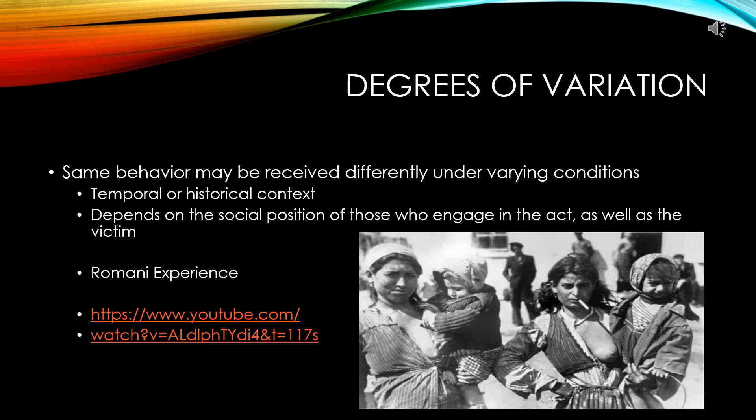According to Becker, when looking at degrees of variation, quite a few aspects influence how we look at behavior. It varies across time, it varies across space, and it depends on the social position of those who engage in the act as well as who the victim is. For instance, when a Black man kills a white woman, punishments are a lot harsher, and when Black people are the victims, perpetrators are less likely to be found.